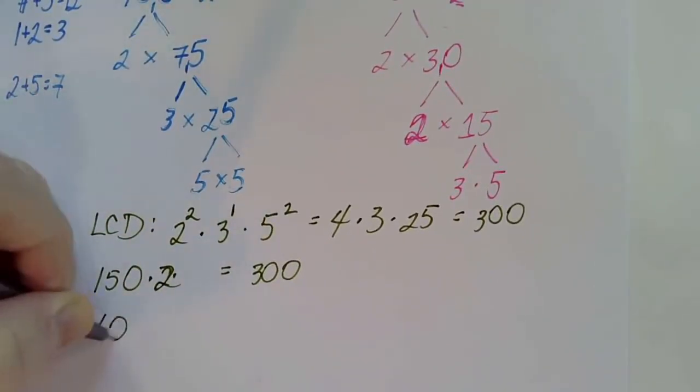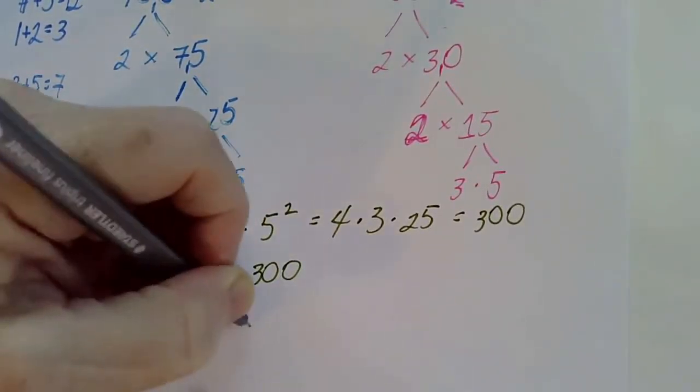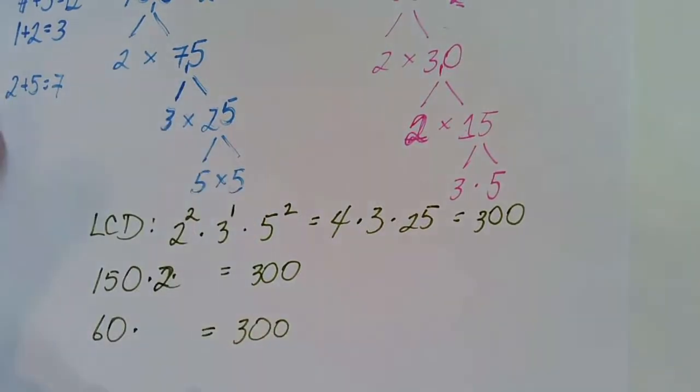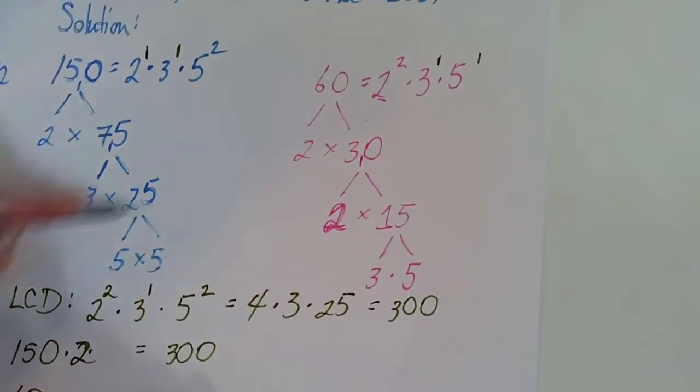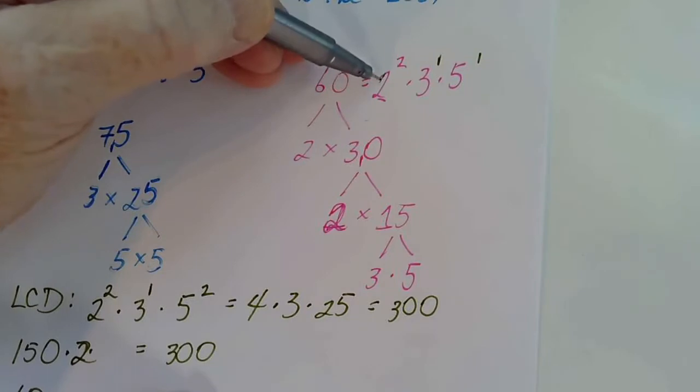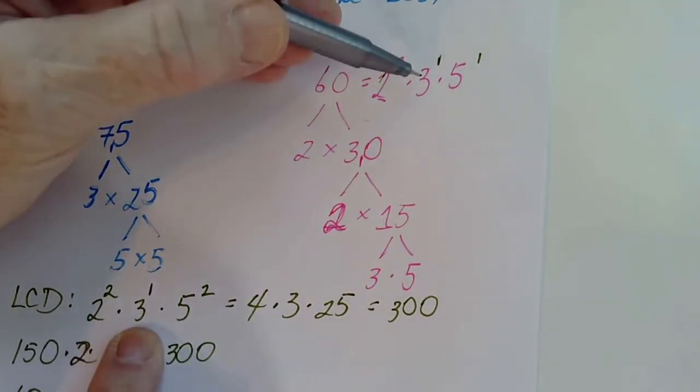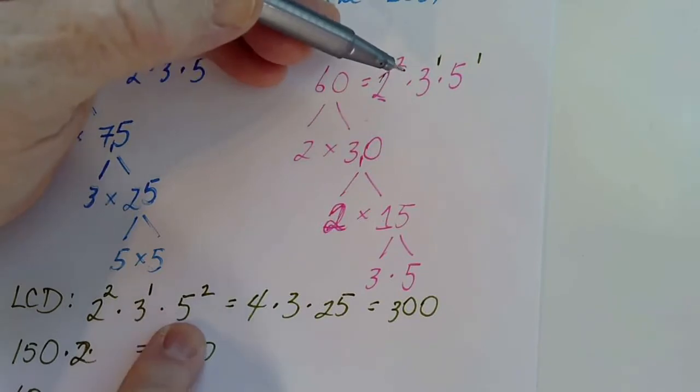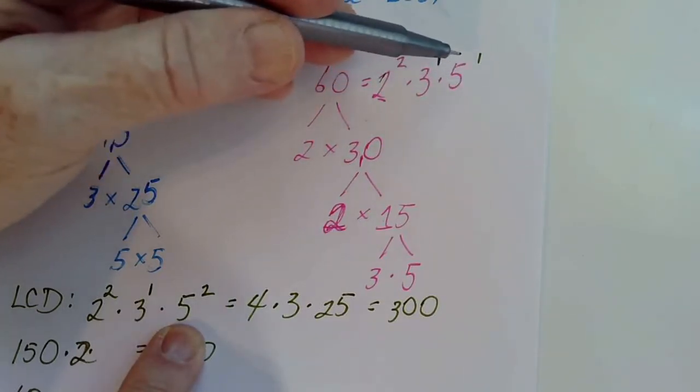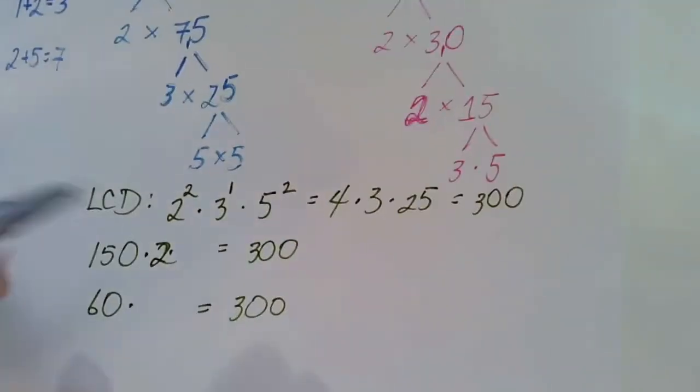Now, what about sixty? Sixty times what is three hundred? Well, for sixty, we had two twos, and we have two twos in the least common denominator, one three, two fives in the least common denominator, and only one five in the sixty. So we're multiplying by five.